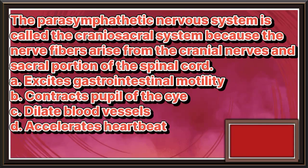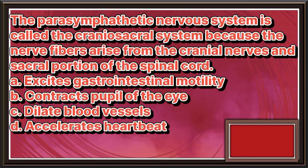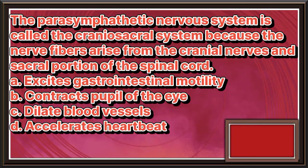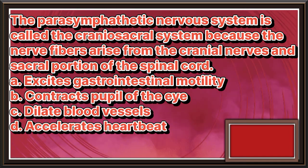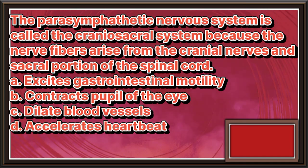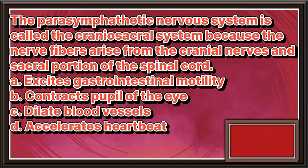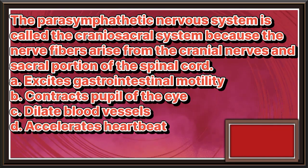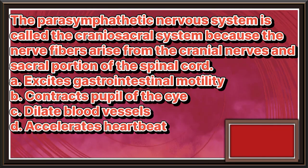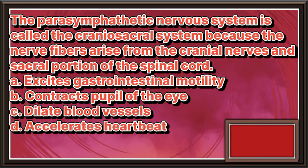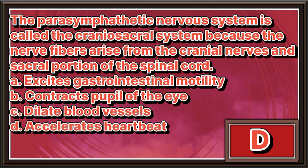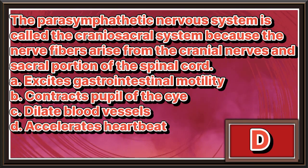The parasympathetic nervous system is called the craniosacral system, because the nerve fibers arise from the cranial nerves and sacral portion of the spinal cord. a. Excites gastrointestinal motility. b. Contracts pupil of the eye. c. Dilate blood vessels. d. Accelerates heartbeat. The answer is letter d.